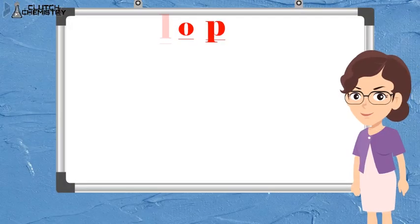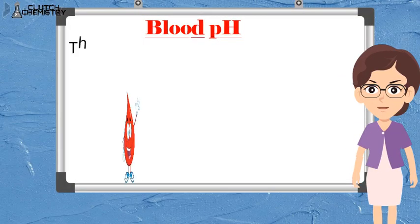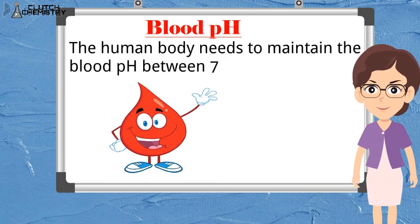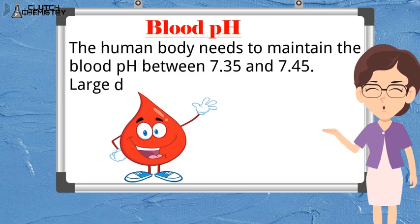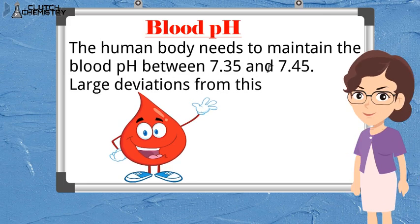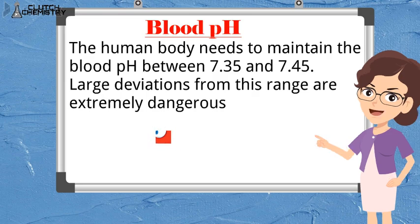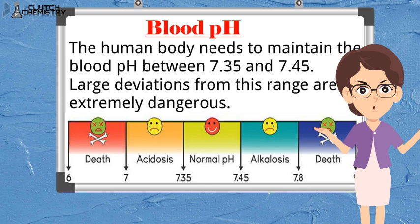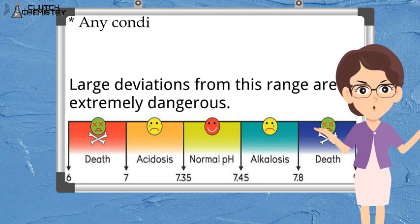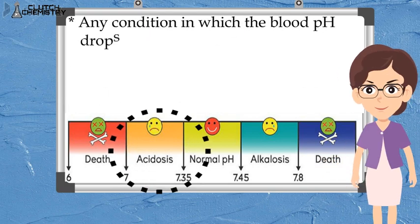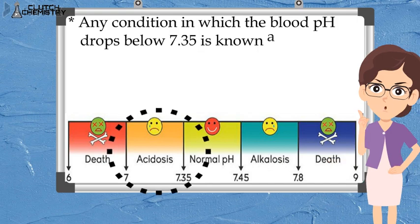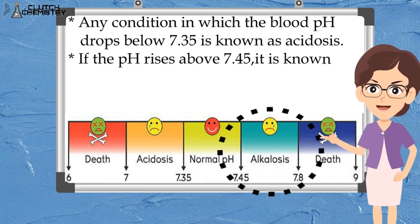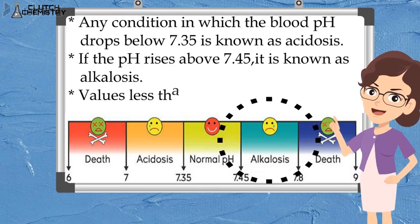Now students, if we discuss our body, our blood pH should remain between 7.35 to 7.45. If there are any large deviations, it will be extremely dangerous. As we can see on the scale, if in any condition the pH goes below 7.35, that condition is called acidosis. And if the pH goes above 7.45, that condition is called alkalosis.